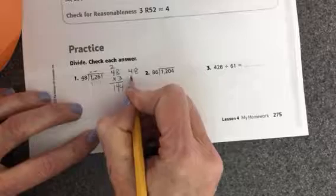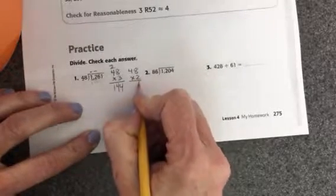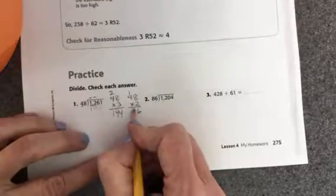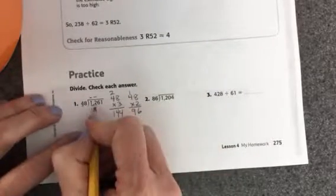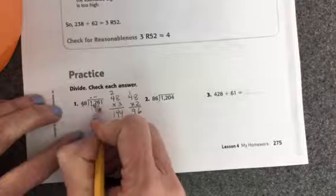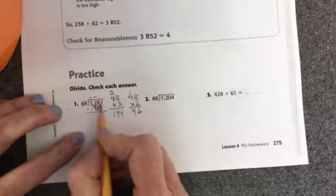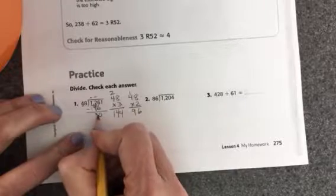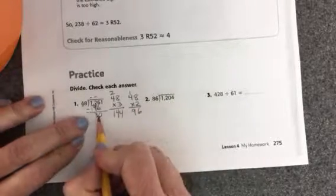So I'm going to try 48 times 2 this time. 8 times 2 is 16. 4 times 2 is 8, plus 1 is 9. So this time I have 96. So I'll write down 96 and subtract. 6 minus 6 is 0, and 12 minus 9 is 3. Okay, this worked.